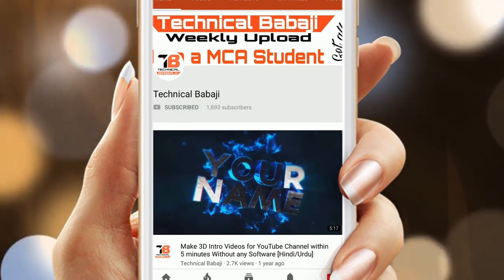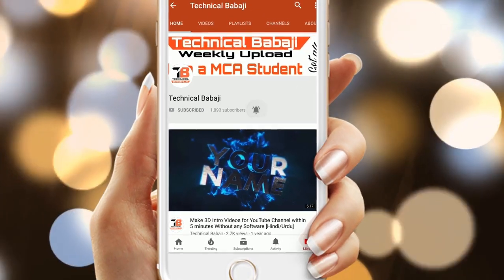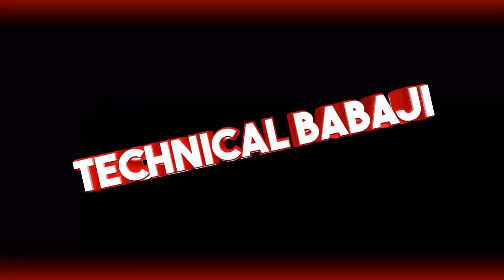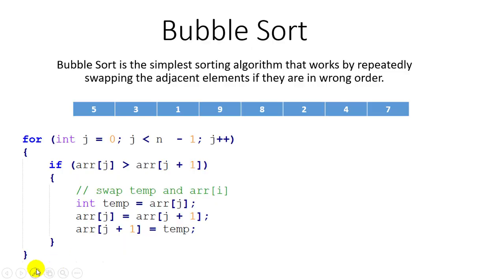Subscribe to Technical Babaji channel and press the bell icon to get the latest video updates. Hello friends, it's me Tariq Akhtar Ansari. In this video I am going to explain the bubble sort algorithm. Bubble sort is the simplest sorting algorithm that works by repeatedly swapping the adjacent elements if they are in the wrong order.